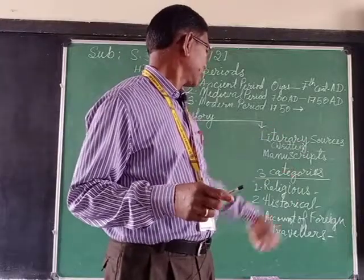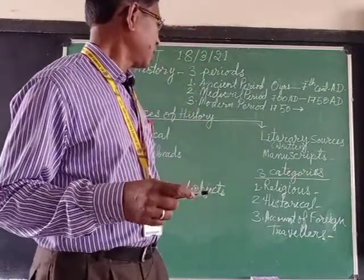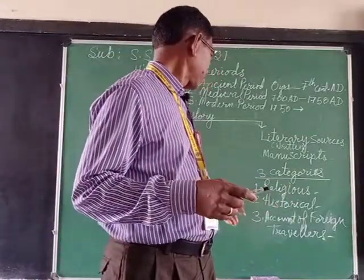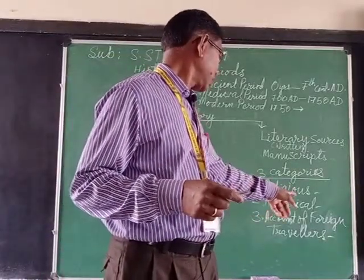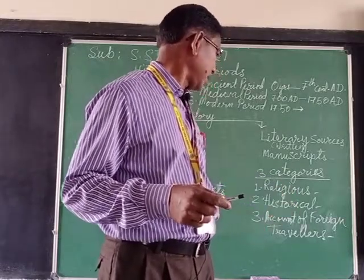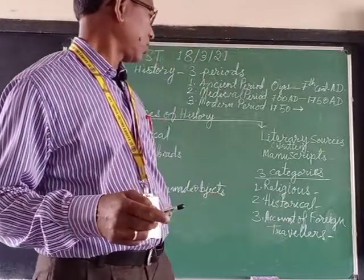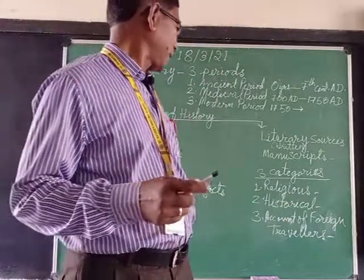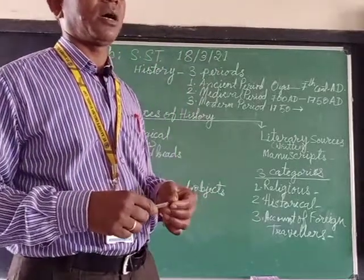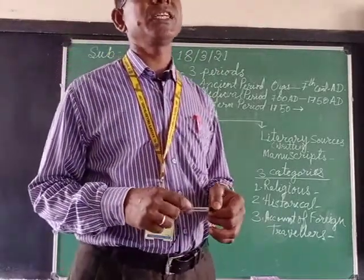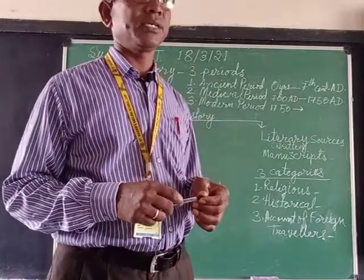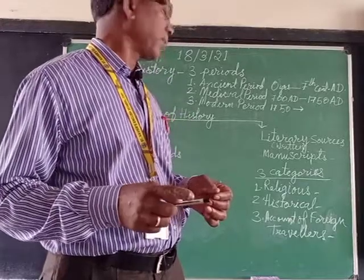Literary sources are divided into three categories: number one, religious; number two, historical; and number three, accounts of foreign travelers. Religious sources are the religious books, such as the Ramayana, Mahabharata, Bhagavad Gita, Vedas, etc.